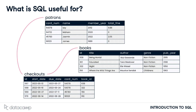In the library database, we might use SQL to find which books James checked out from the library in 2022. In an HR database, we could query salaries for employees in marketing and accounting to determine whether pay across departments is comparable.